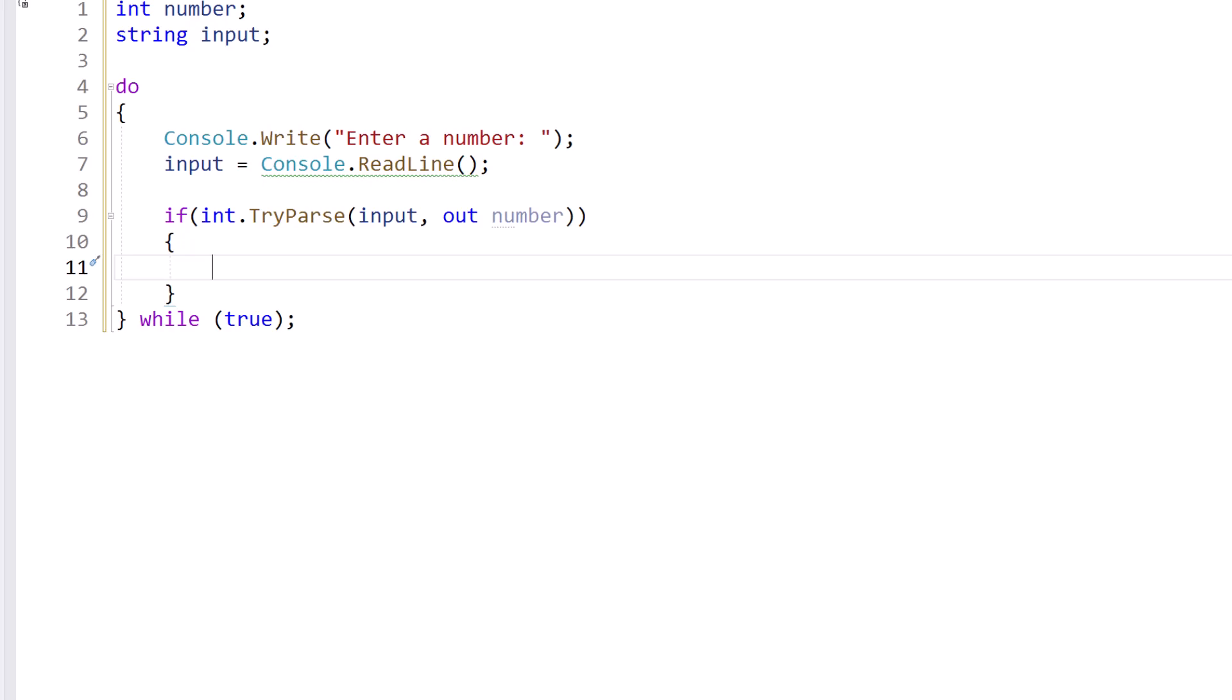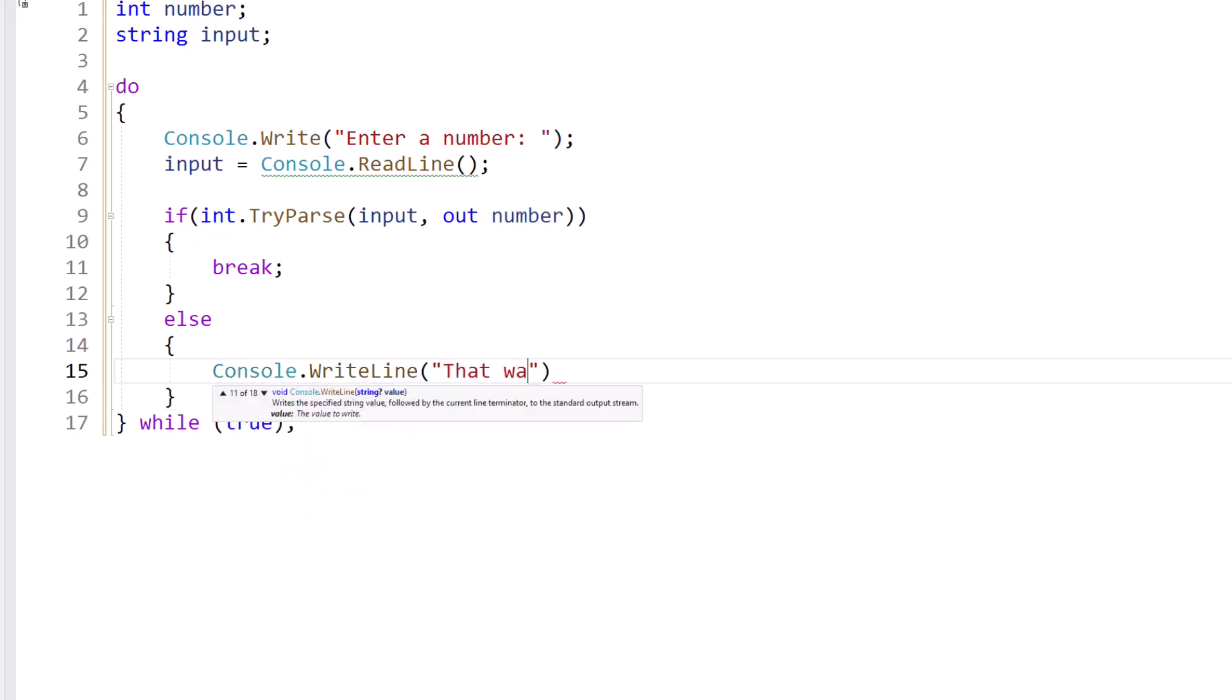So putting this in an if statement, if true, if it's successful, then we're going to break. And if it's not successful, then we can print something like that was not a number.